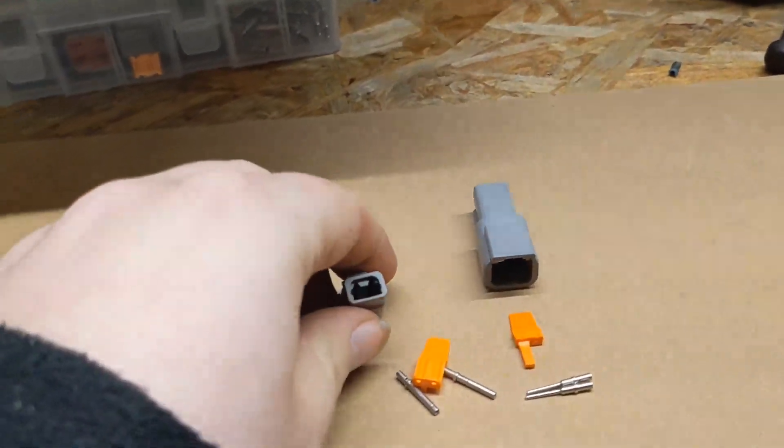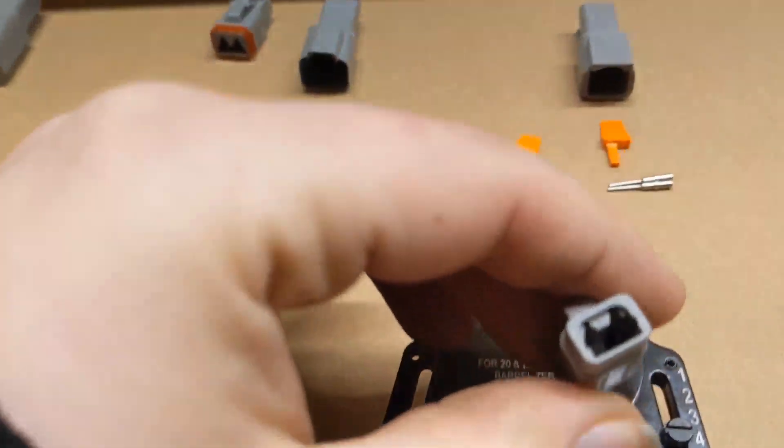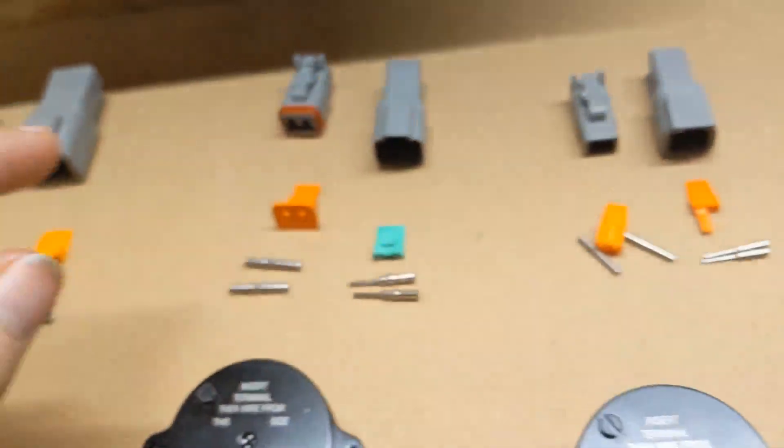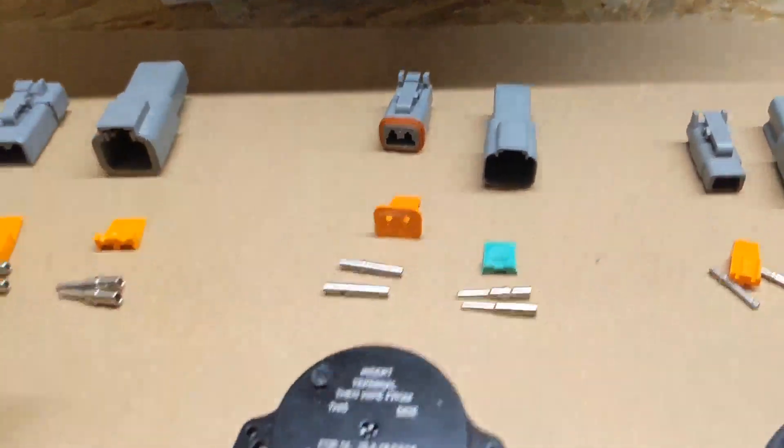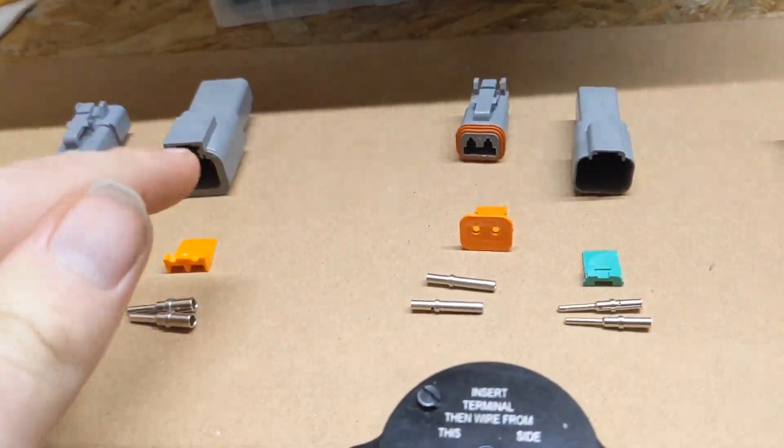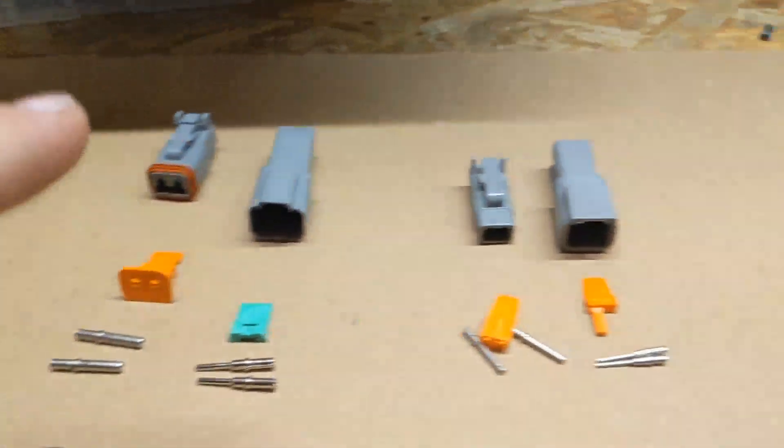On the female ones, you just push them through the back and then you use the little locking tab, which you then push in. You just push them in, that locks them in, and then you have the same for the other side. Again, they all have slightly different ways of working.